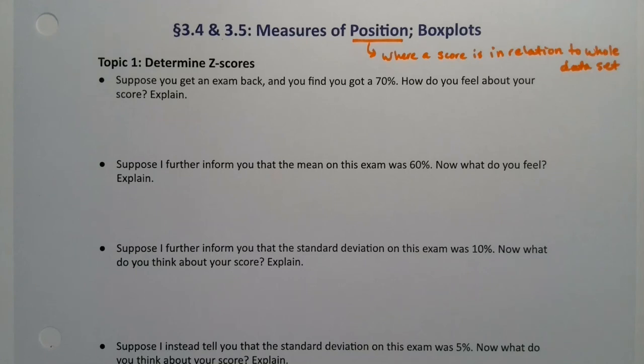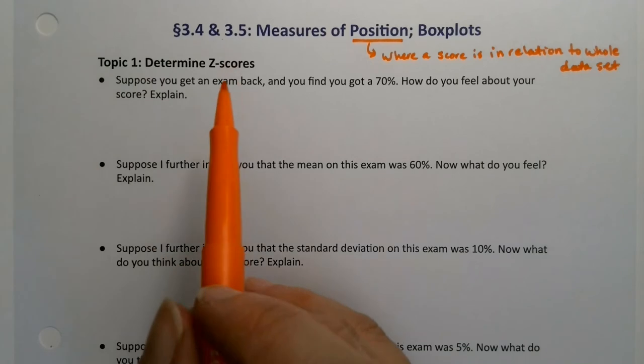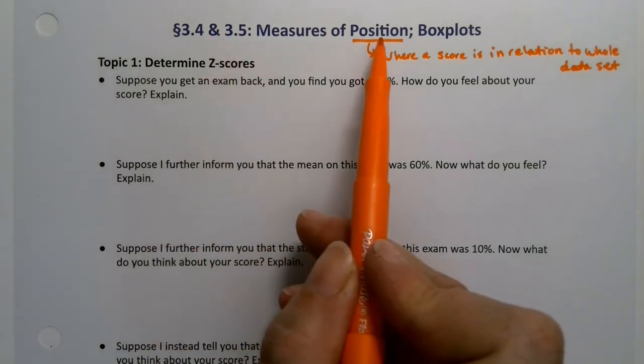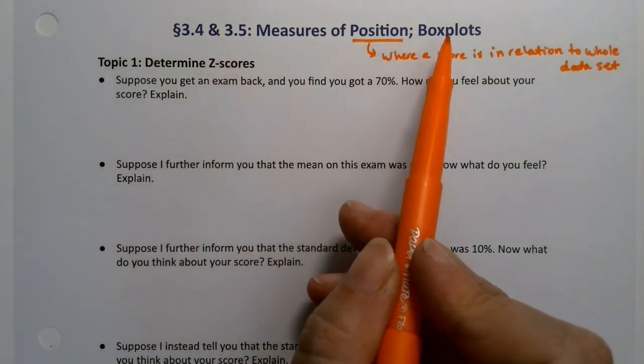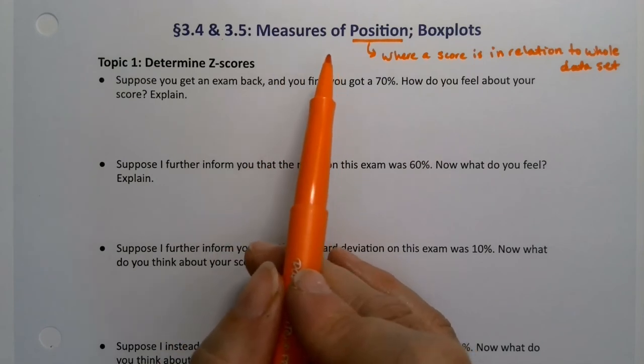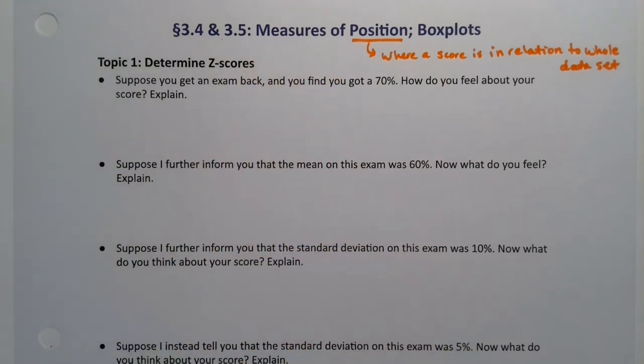We're now going to cover sections 3.4 and 3.5. Now 3.4 is measures of position and 3.5 is box plots. However, there's a little bit of bleed over between the two, so I kind of say that we're merging them together, although there's definitely a separation.